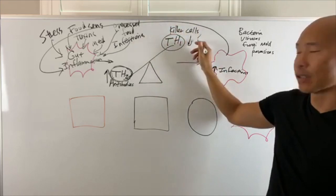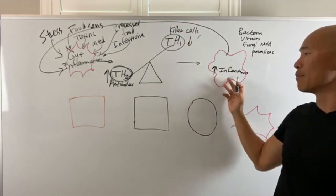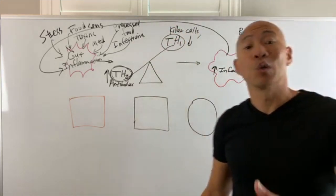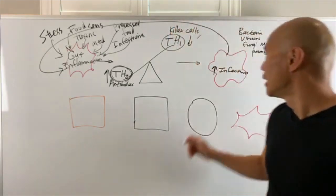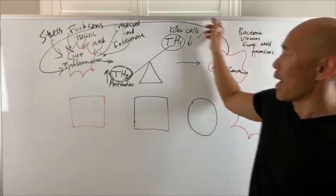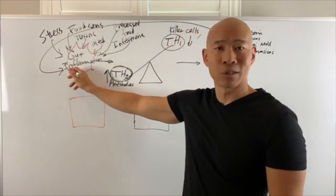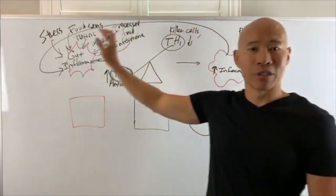Causing a decrease in killer cells, causing your body to become more easily infected, or you cannot fight off an infection. Then this infection will come back and trigger more inflammation in the gut, and this becomes a vicious cycle.